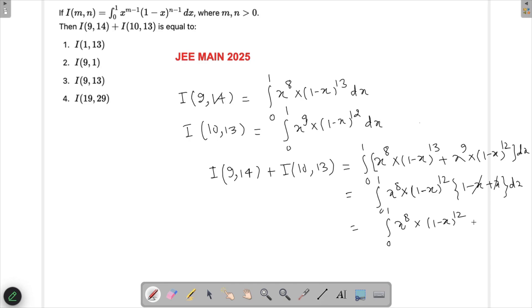We'll compare it from the options we are having, and this is one of those options which will verify. If I substitute x equals 9, this will become x raised to the power 8, and if I substitute 13, this will become 1 minus x raised to the power 12, and that is my answer. We just had to substitute these values and sum them up, and we would get our answer. We don't even have to solve the integration.